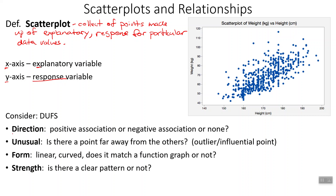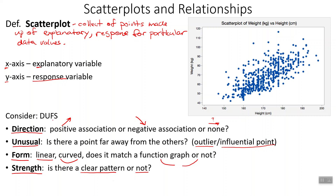When describing a scatterplot, we want to remember DUFFs. D is for direction: is it going up (positive association), going down (negative association), or is there no association? U is for unusual: is there a point really far away from all the others — that could be an outlier or an influential point, and we'll go over the difference later. F is for form: is it linear, curved, exponential? S is for strength: is there a very clear pattern? We say strong, moderate, or weak.